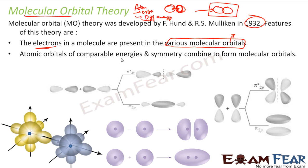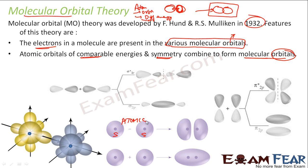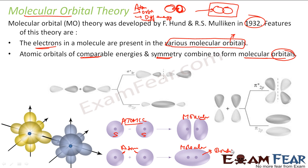Atomic orbitals of comparable energies and symmetry combine to form molecular orbitals. So how do you get molecular orbitals? Two s atomic orbitals combine to form molecular orbitals. The law of conservation of orbitals holds true here — if two atomic orbitals combine, they form two molecular orbitals. One is the bonding molecular orbital and the other is the anti-bonding molecular orbital.